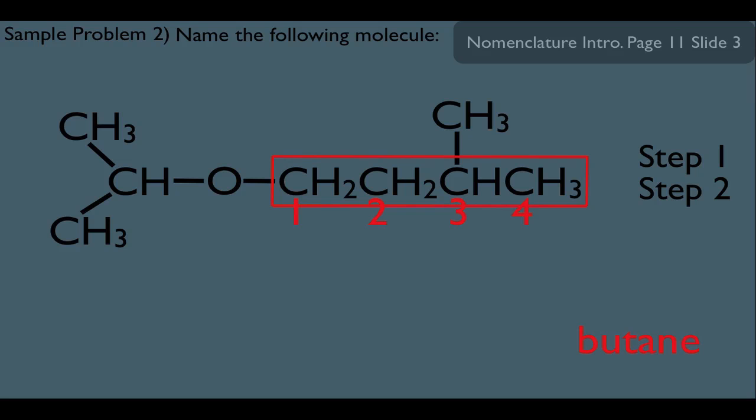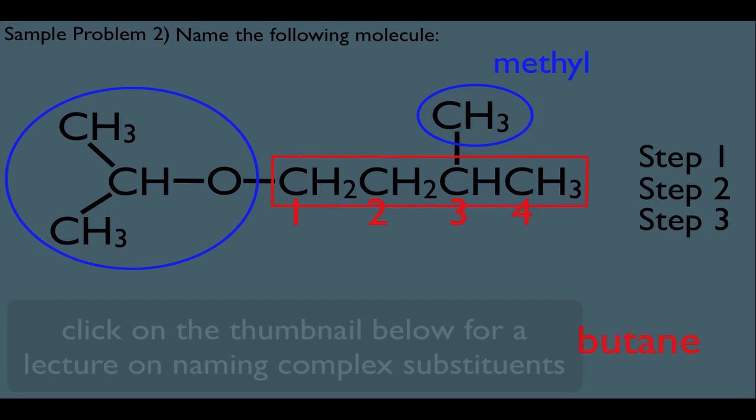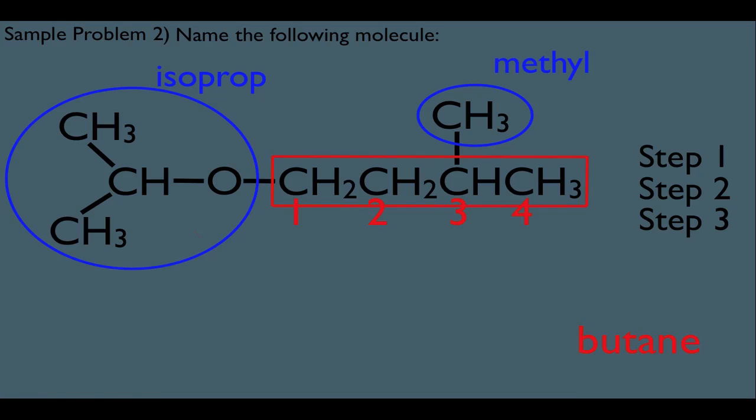Which brings us to step three here. Let's circle and label here. Notice that top one is just simply a methyl substituent. And this other one here, notice it has three carbons in it and we're connected to the central carbon. That means isoprope. And because we're connected to an oxygen as well, we're going to call this isopropoxy.